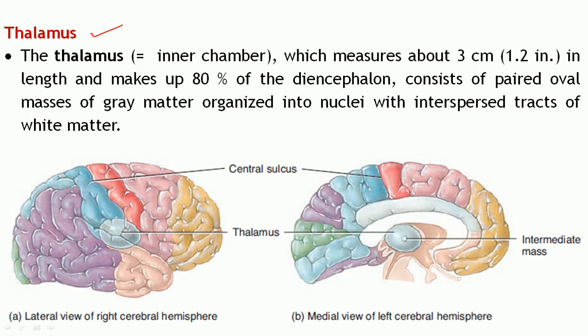The first part of the diencephalon is the thalamus. The exact meaning of this term is 'inner chamber,' because it is located interiorly. It measures around 3 centimeters in length and makes up about 80 percent of the diencephalon — so most of the diencephalon comprises the thalamus.